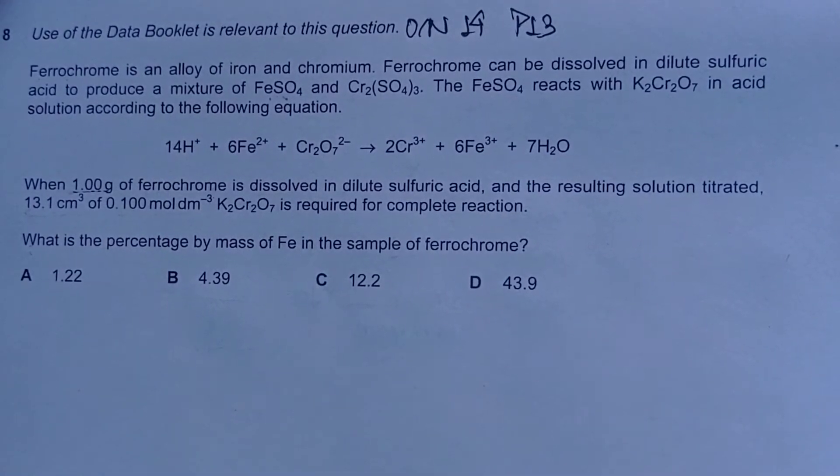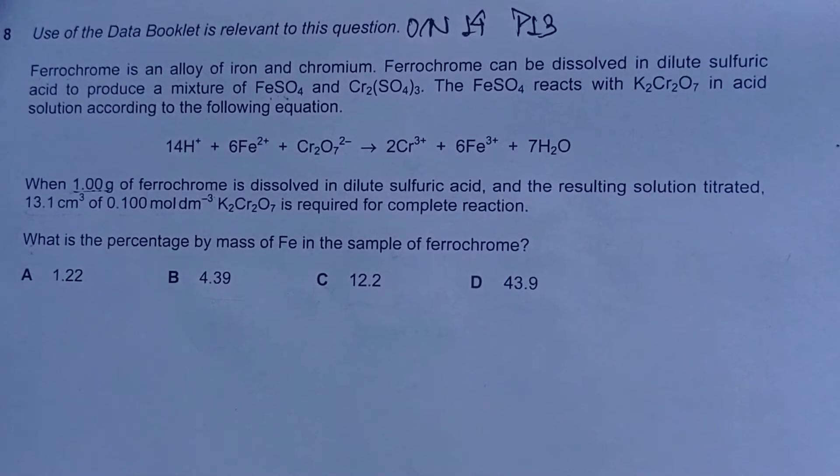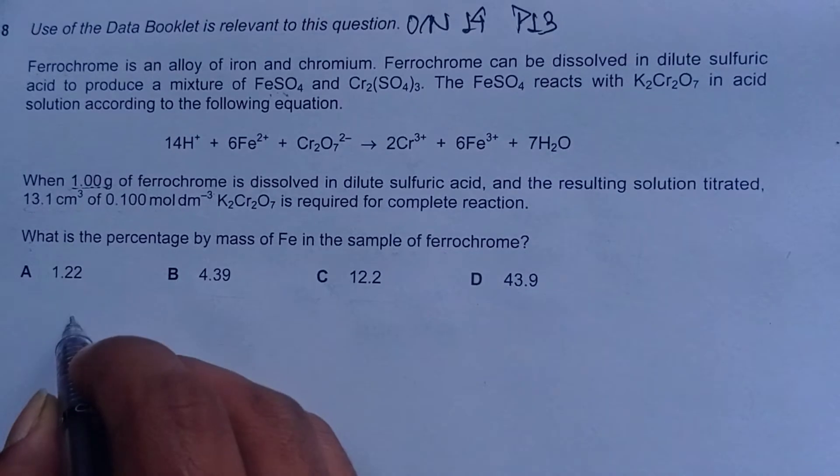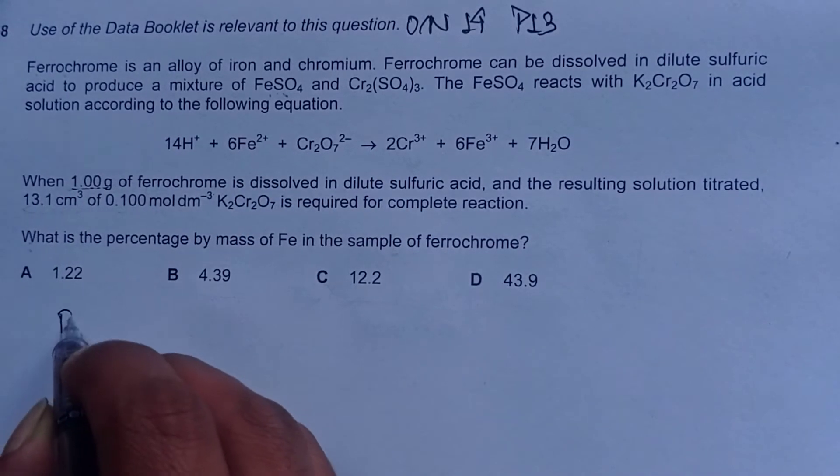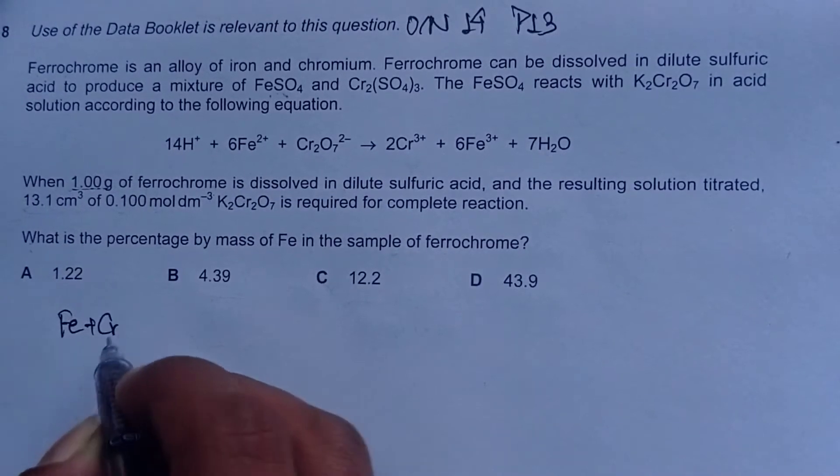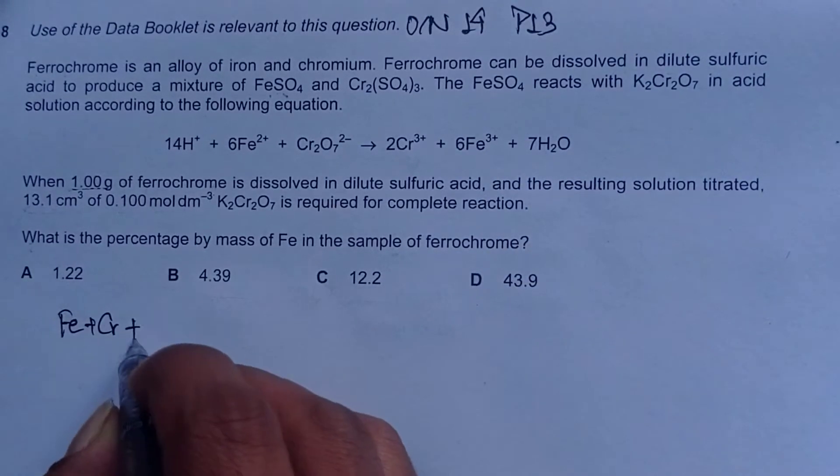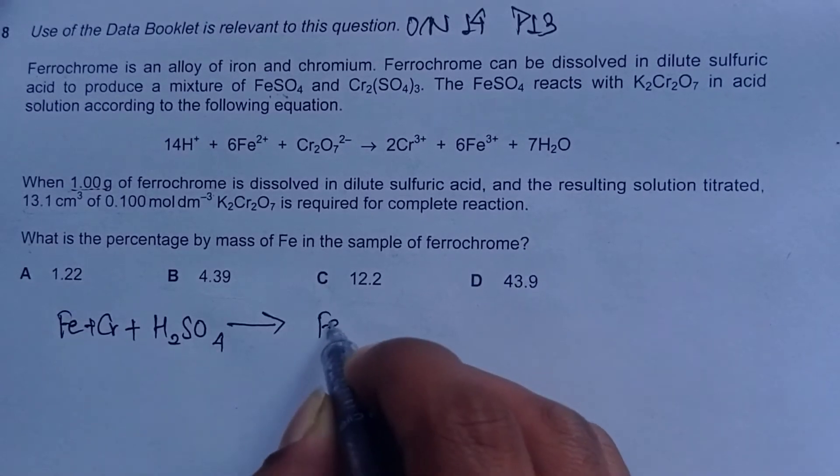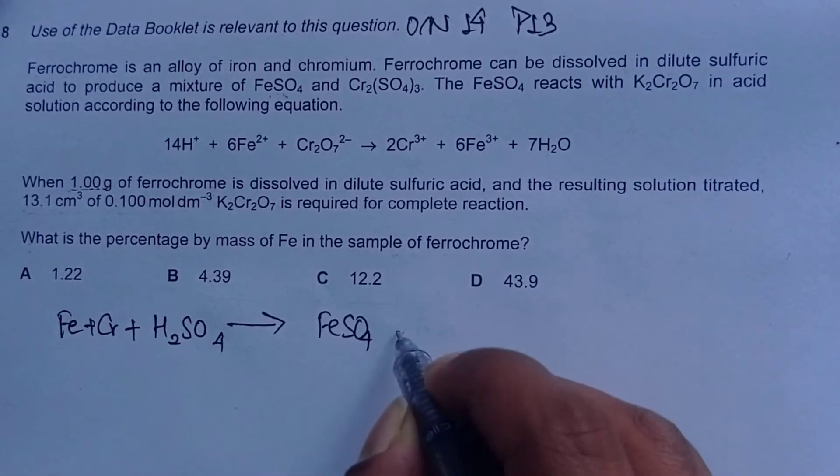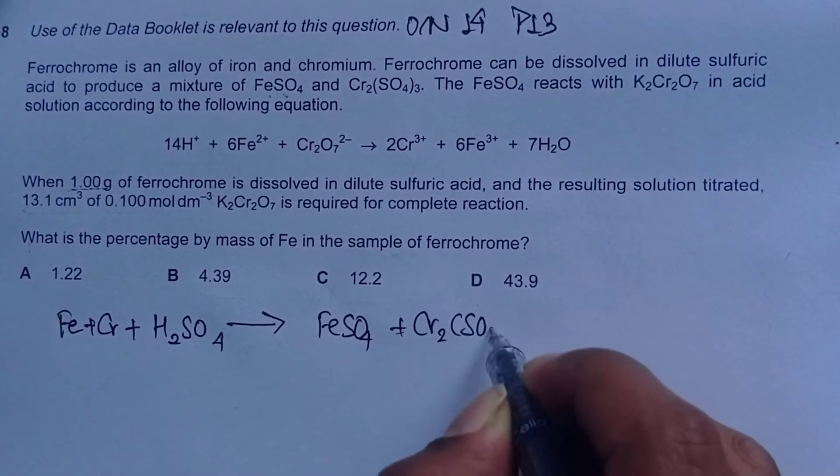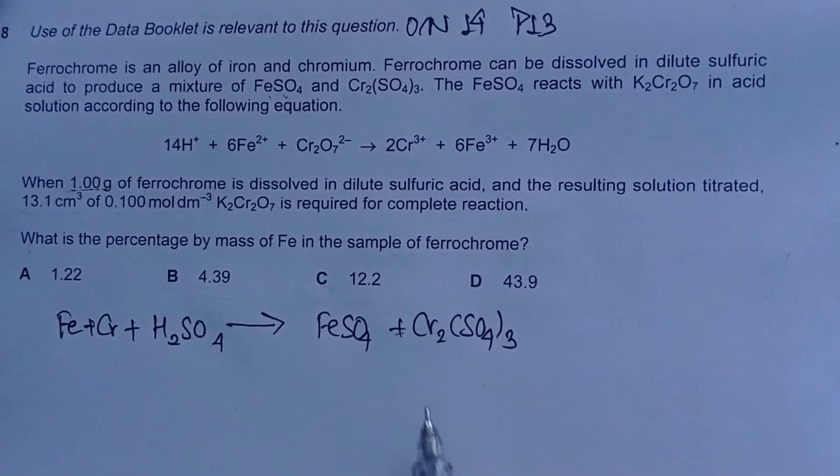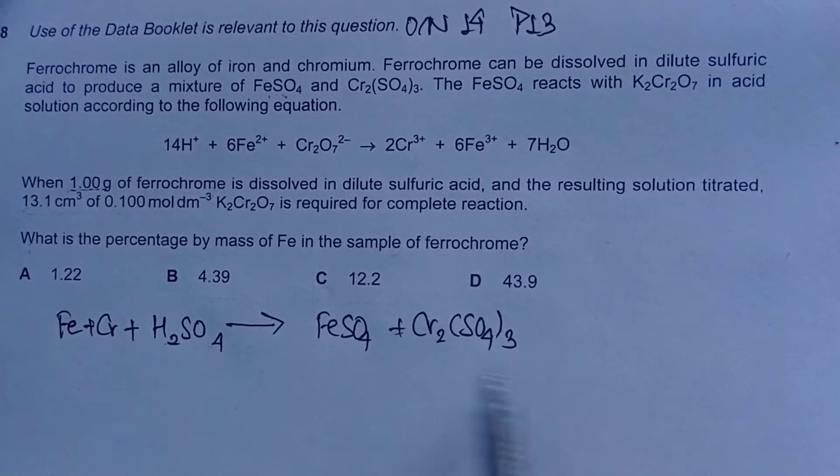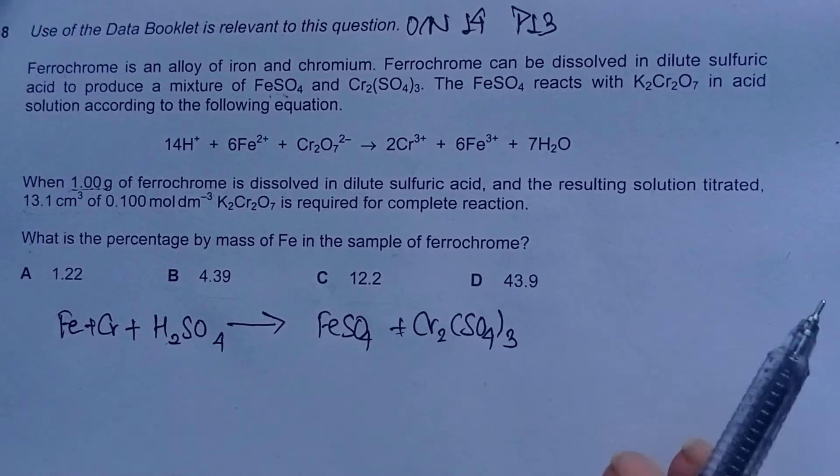We can construct equations to make this solving process easier. First, we have ferrochrome, which is an alloy of iron and chromium, so we can write Fe + Cr. It's dissolved in H2SO4 to produce a mixture of FeSO4 and Cr2(SO4)3. Hydrogen is also a byproduct of this reaction, but we're not concerned with that.